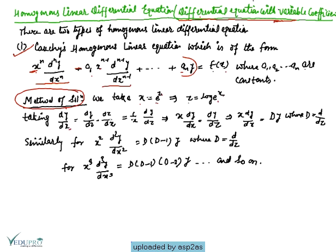We have dy/dx = (dy/dz)(dz/dx). From this, dz/dx = 1/x, so dy/dx = (1/x)(dy/dz). Therefore, x dy/dx = dy/dz, which we write as x dy/dx = Dy, where D denotes d/dz.